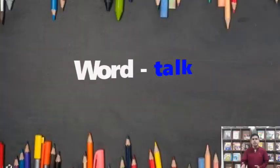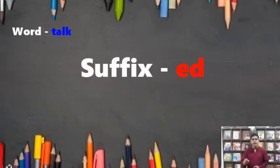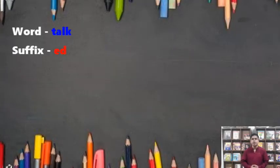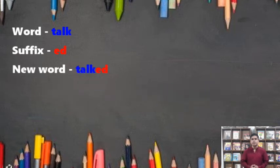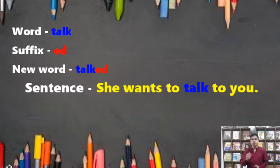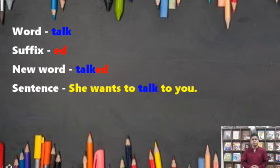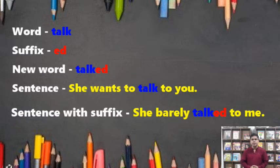Let us take an example. The word 'talk' with the suffix '-ed' gives the new word 'talked'. The sentence: 'She wants to talk to you.' The sentence with suffix: 'She barely talked to me.'